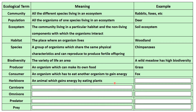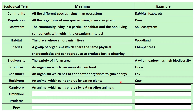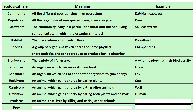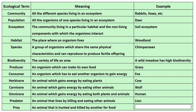A herbivore — basically vegetarian — gains energy by eating plants. A carnivore eats other animals. An omnivore, which most of us probably are, gains energy by eating both plants and animals. A predator is an animal that lives by killing and eating other animals, like a lion. And the prey is the animal that is hunted and killed by another for food — for example, a rabbit.